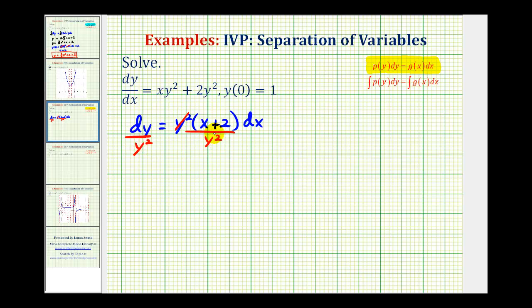This will simplify to one. And then on the left side, instead of leaving it in this form, we're going to move this up into the numerator so we can write this as y to the negative two dy equals the quantity x plus two times dx.